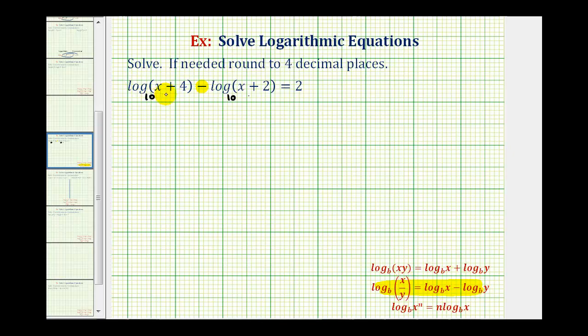So common log of the quantity x plus four minus the common log of the quantity x plus two is equal to the common log of x plus four divided by x plus two. This is still equal to two and, of course, our base is still 10.